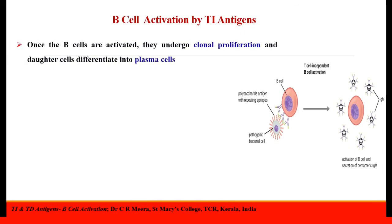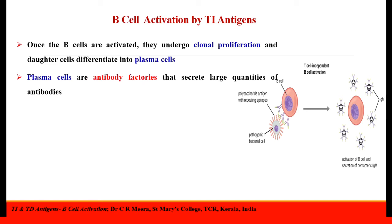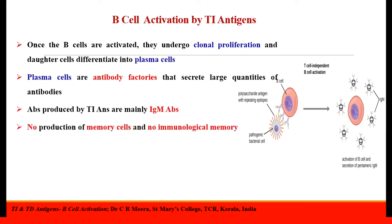Once the B-cells are activated by the T-independent antigens, they undergo clonal proliferation and daughter cells differentiate into plasma cells. Plasma cells are antibody factories that secrete large quantities of antibodies. Antibodies produced by T-independent antigens are mainly IgM antibodies.